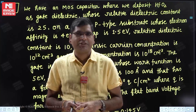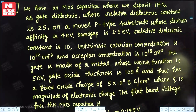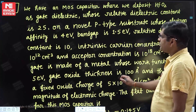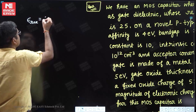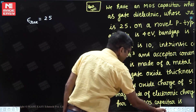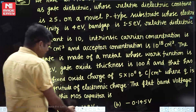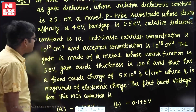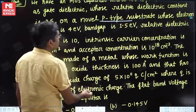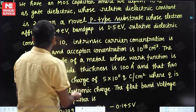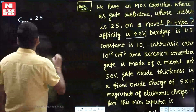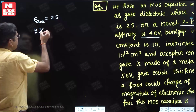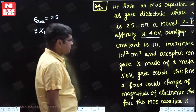The first question involves a MOS capacitor where we deposit HfO2 as the gate dielectric whose relative dielectric constant is 25. So the relative permittivity of the oxide, epsilon_r(oxide), is 25. We have a p-type substrate whose electron affinity is 4 electron volt — so q*chi_s = 4 eV. This is given to us.